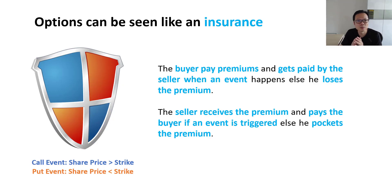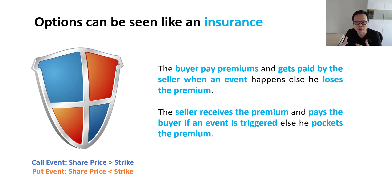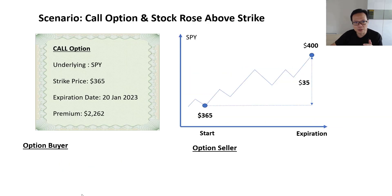How do options work? The easy way to look at options is to think of it like insurance. The buyer of an option is like paying premiums to the seller, and the buyer only gets paid by the seller when the event is triggered. For a call, the price of the underlying security has to rise above the strike. For a put, the price has to go below the strike. If the event does not happen by the expiry date, the buyer loses the premium and the seller gets to keep it.